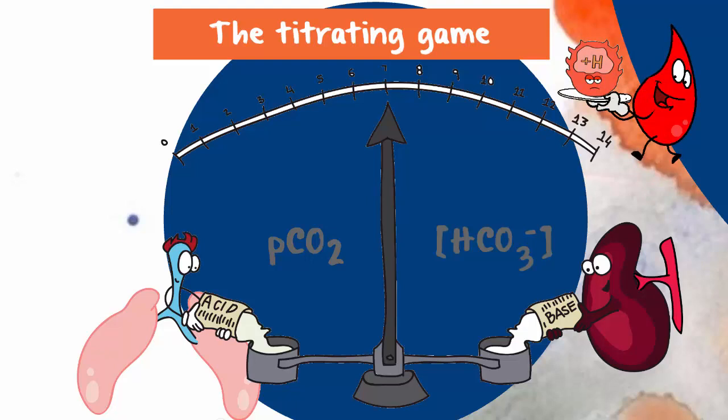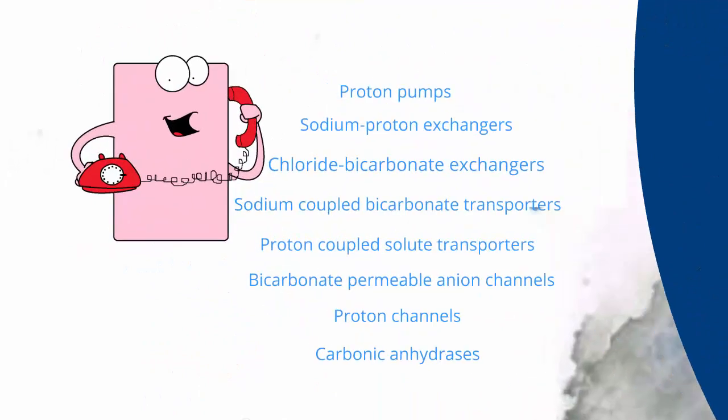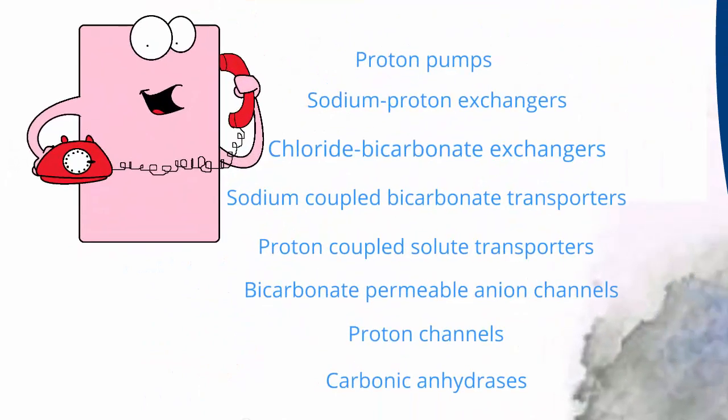Individual cells control the acid levels they are exposed to through acid-extruding and acid-loading membrane transport proteins. These include pumps, exchangers, transporters, channels, and a very busy enzyme called carbonic anhydrase.